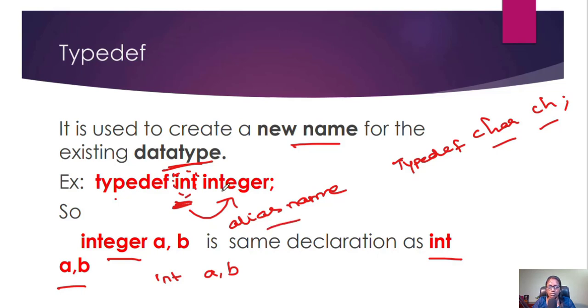Int can be called as integer. So if you call int as integer, then you can define in your program integer a, b, which is the same declaration as int a, b.